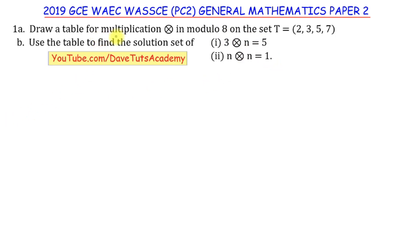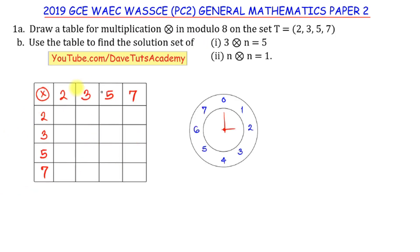To draw the multiplication table in modulo 8, we set up a truth table as shown. We have a multiplication operation carried out on the set {2, 3, 5, 7}, with the elements placed on both the horizontal and vertical columns so that they can multiply each other.